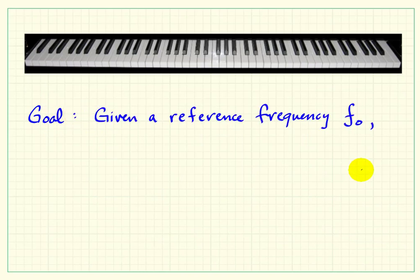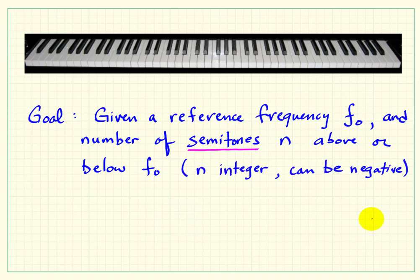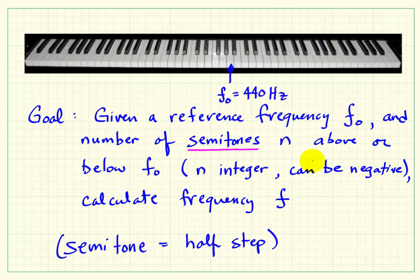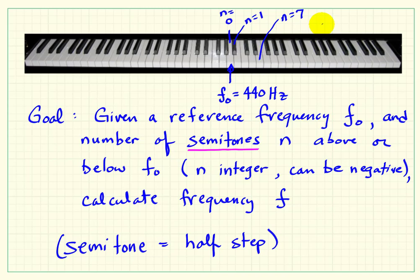For our equal temperament tuning concept, given a reference frequency F0 and a number of semitones N above or below it — where N can be negative if we're below — we want to calculate the frequency of that interval. If F0 is our 440 Hertz reference, moving a half step up to the black key is N equals 1. Counting up further, N equals 7 is another semitone, N equals 11 is a black key, and an octave up is N equals 12. A semitone is the same thing as a half step; going up 12 semitones brings us back to the octave interval.